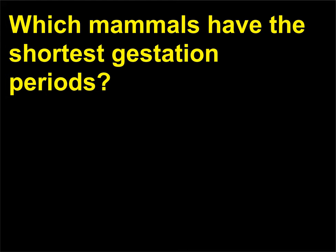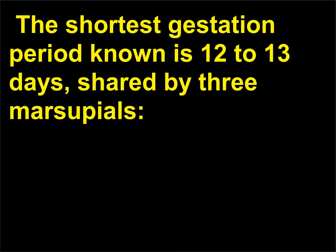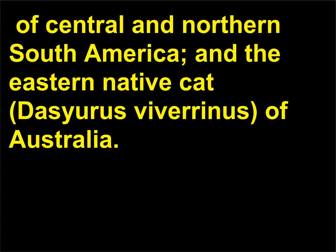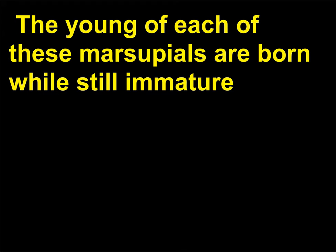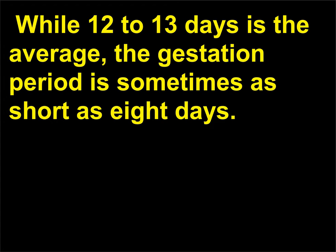Which mammals have the shortest gestation periods? Gestation is the period of time between fertilization and birth in viviparous animals. The shortest gestation period known is 12 to 13 days, shared by three marsupials: the American or Virginian opossum (Didelphis marsupialis), the rare water opossum or yapok (Chironectes minimus) of central and northern South America, and the eastern native cat (Dasyurus viverrinus) of Australia. The young of each of these marsupials are born while still immature and complete their development in the ventral pouch of their mother. While 12 to 13 days is the average, the gestation period is sometimes as short as 8 days.